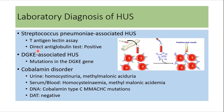If Streptococcus pneumoniae-associated HUS is suspected, Thomsen-Friedenreich antigen testing can be done, and direct antiglobulin test will be positive. If DGKE-associated HUS is suspected, we can look for DGKE gene mutations. If cobalamin disorder is suspected, urine can be tested for homocystinuria and methylmalonic aciduria, serum and blood can also be tested, and DNA analysis can be done to look for cobalamin type C mutations.